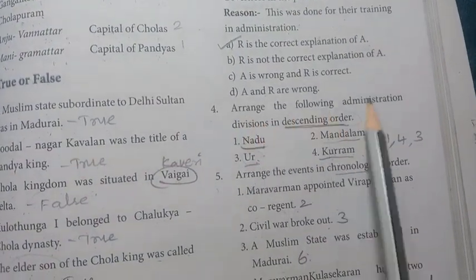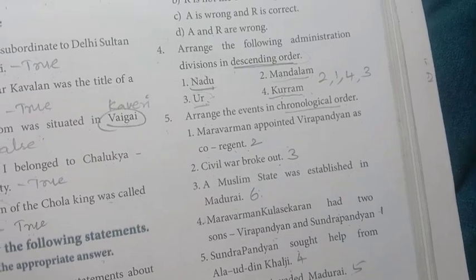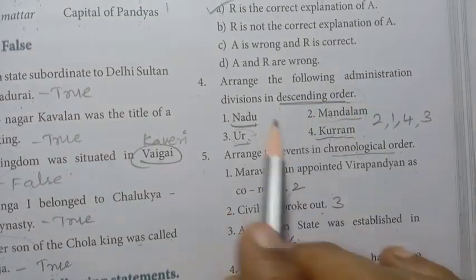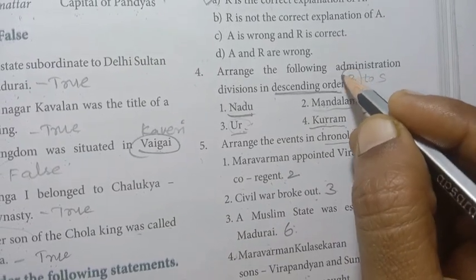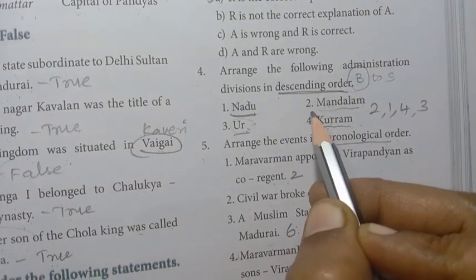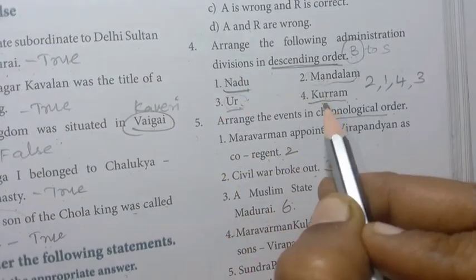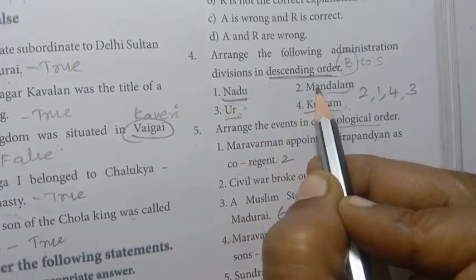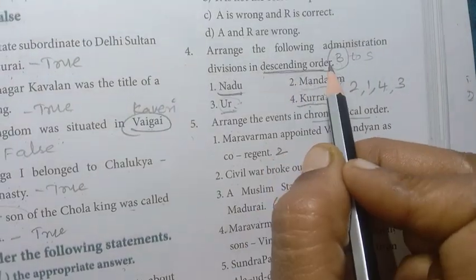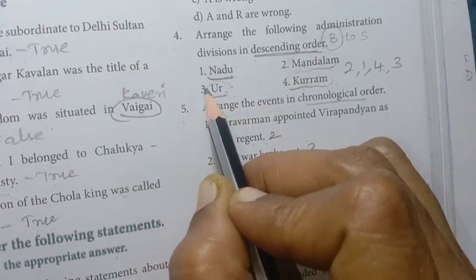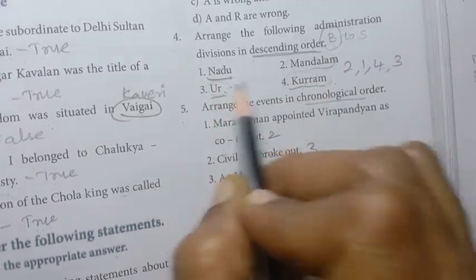Arrange the following administration divisions in descending order: Mandalam, Nadu, Kutram, and Ur. The correct descending order is 2, 1, 4, 3 — that is Mandalam, Nadu, Kutram, Ur. Ur is the lowest unit.